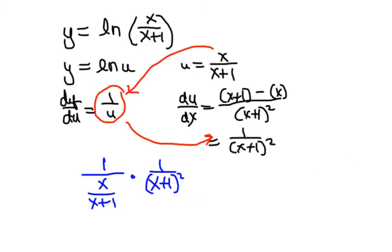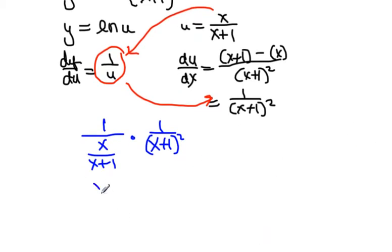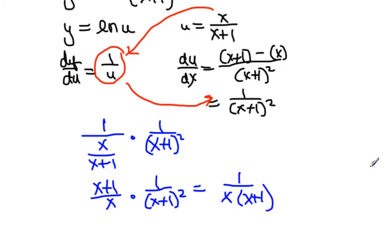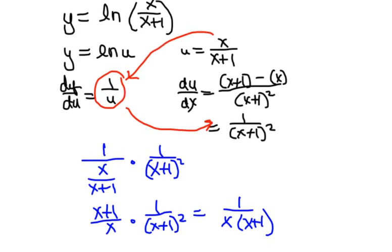So the result I'm going to get here is going to be x plus 1 over x times 1 over x plus 1, all squared. We can see this is going to cancel, so I'm going to be left with 1 over x times x plus 1. That's your derivative of this problem right here.